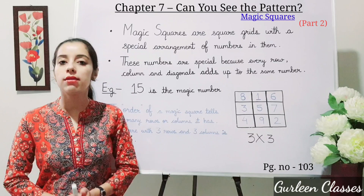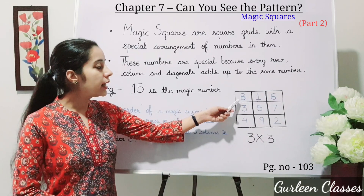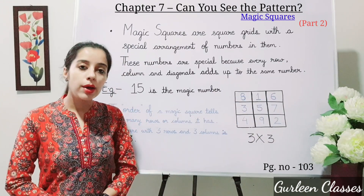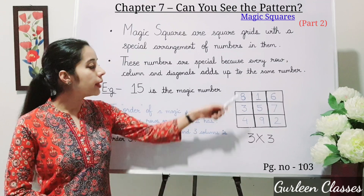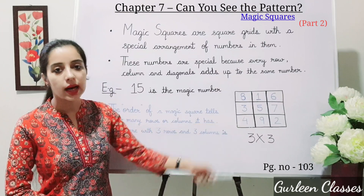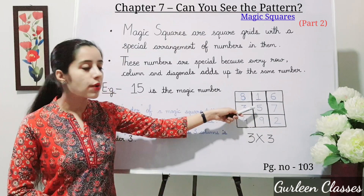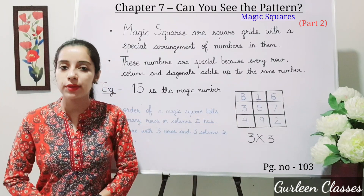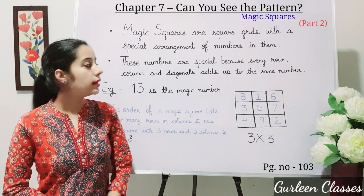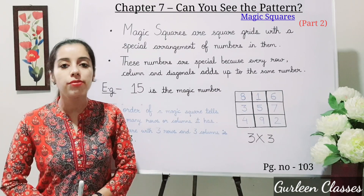For example, in this figure, 15 is the magic number. If I add 8 plus 1 plus 6, that is 15. Now if I add vertically, 8 plus 3 is 11, plus 4 is 15. Every row, column, and diagonal adds up to the same number — 15.